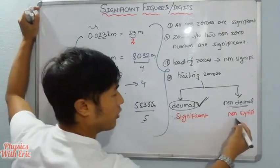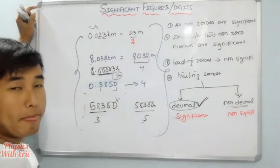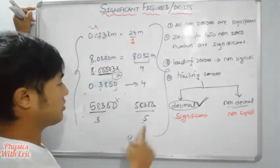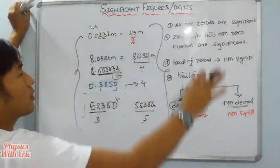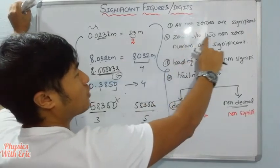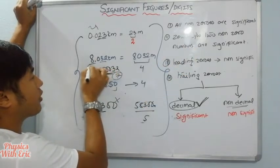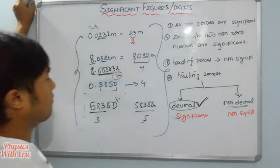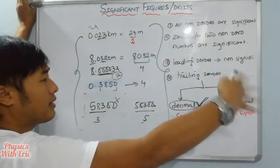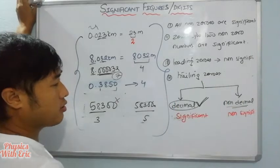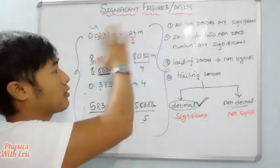Zero is non-significant when it is a leading zero — I'm not talking about non-digit values, I'm talking about zeros. All non-zero digits are significant; zeros between two non-zero digits are significant; leading zeros are non-significant. Trailing zeros also follow specific rules.